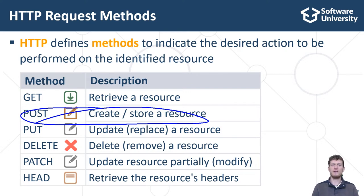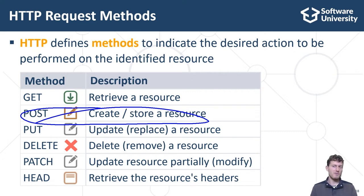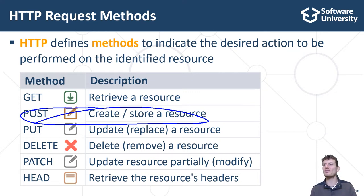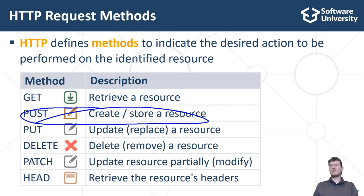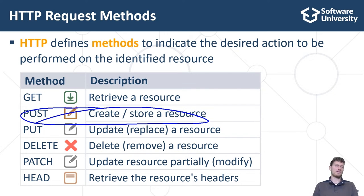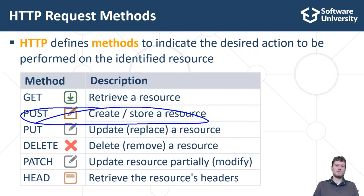The POST method is used to create or store a resource on the web server. Remember that POST creates something new at the web server — it modifies the state of the server side. For example, when you log in with your username and password at a website, the login form uses a POST request to send your credentials to the server. If the login data is valid, the server creates a new session and sends the session identifier as a cookie. Another example of HTTP POST is when you enter and submit your shipping address in an e-commerce application.